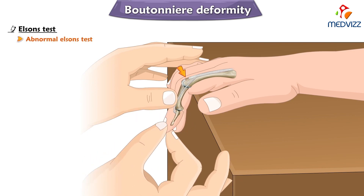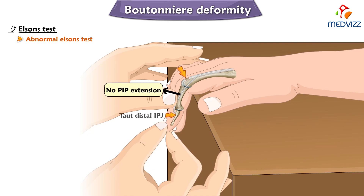In the abnormal Elson's test, there is no active extension of the proximal interphalangeal joint and the distal interphalangeal joint is slightly extended. This is what we need to know about Elson's test.